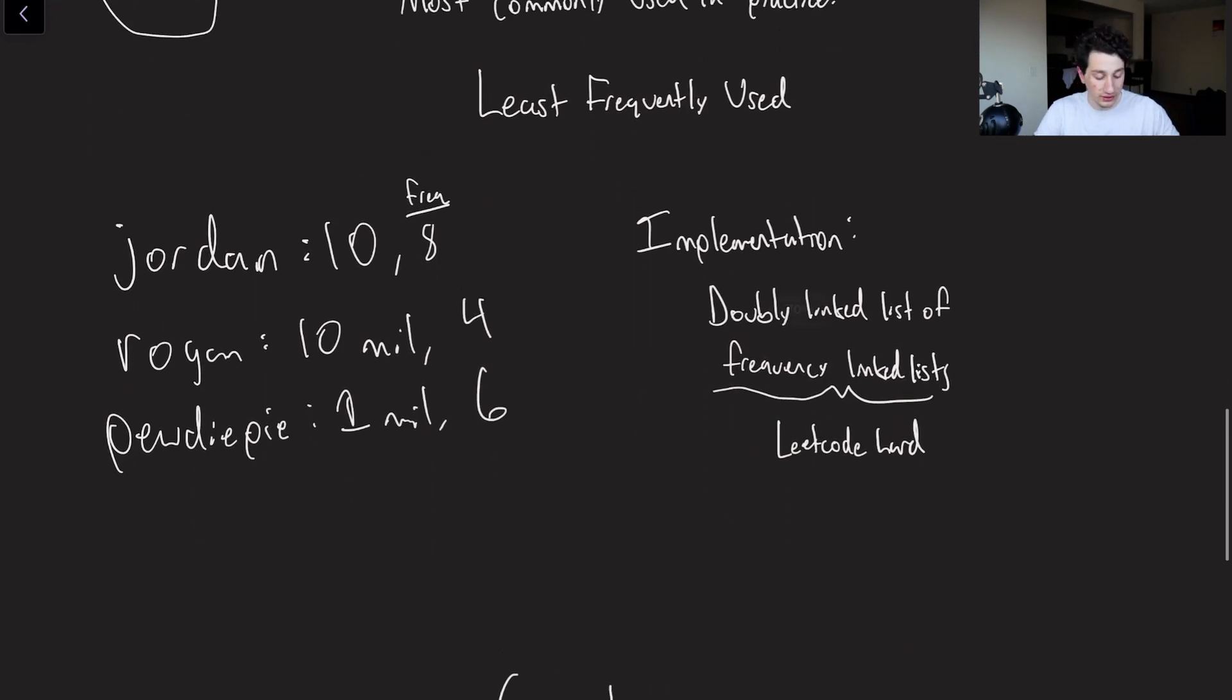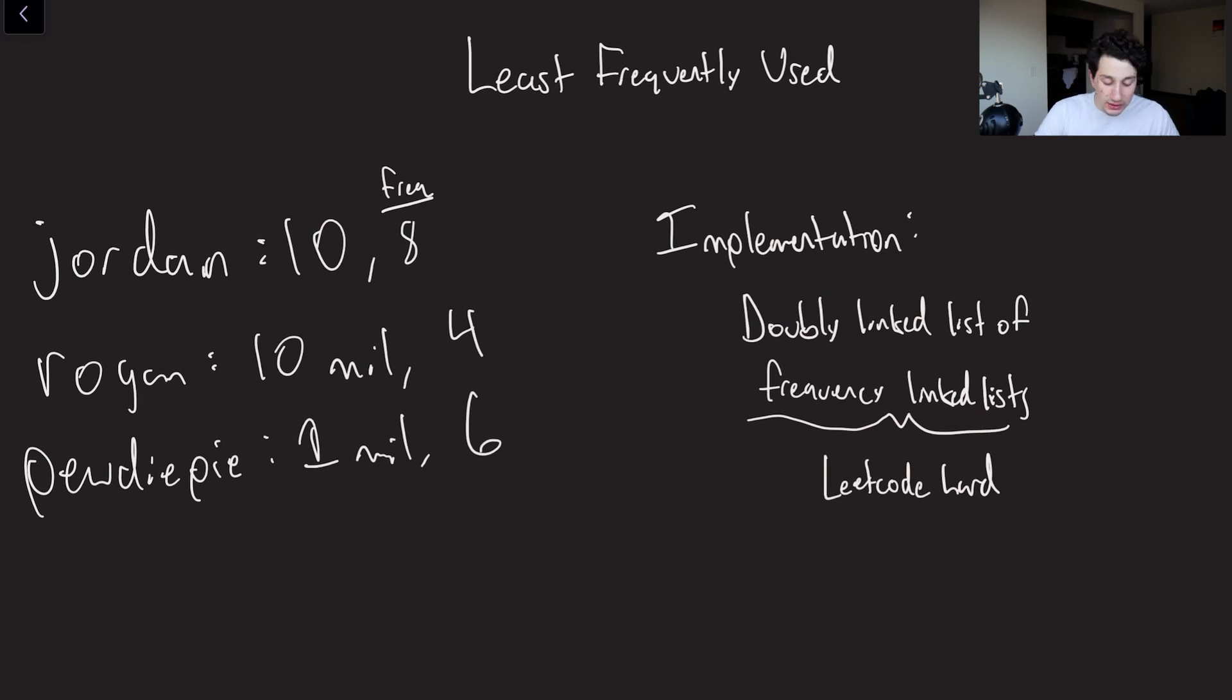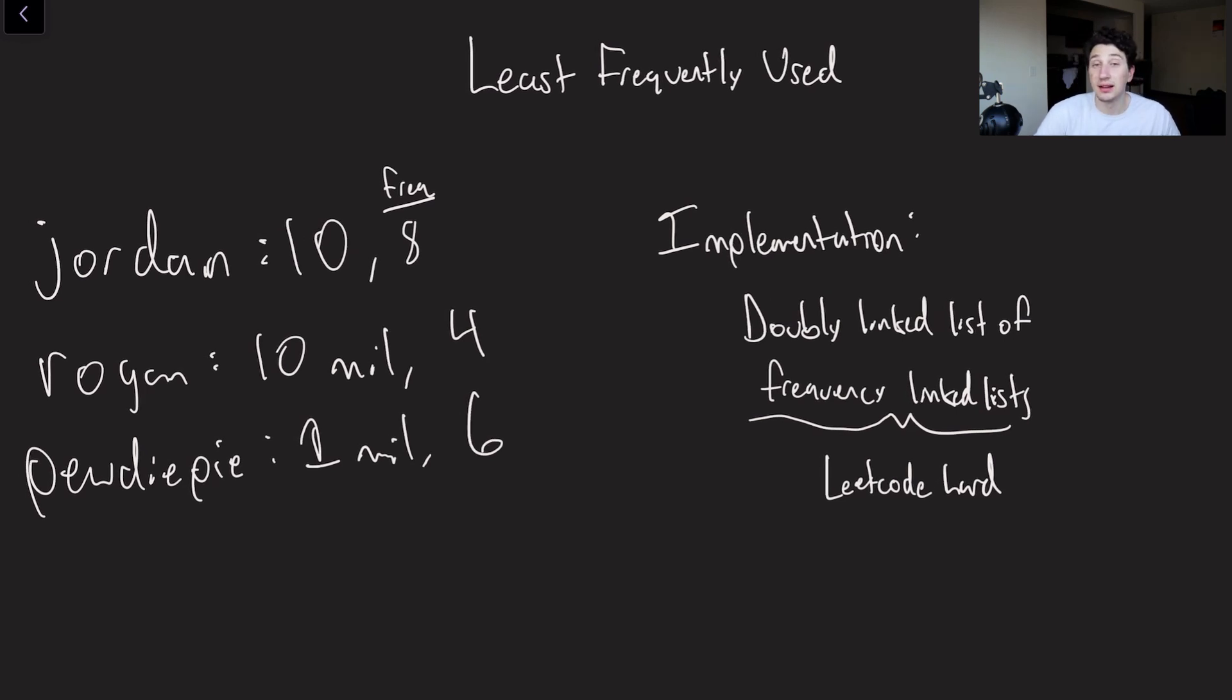Another possible alternative is LFU or least frequently used. So I'm not going to go too deeply into the implementation of something like this, because in and of itself, it is a LeetCode hard problem. But the general gist is you would actually want basically like two sets of doubly linked lists also with hash maps. And each of those doubly linked lists would have a frequency. So the frequency is going to represent how many times that cache entry has been accessed before. So you can see for the example of Jordan and how many views he has on YouTube, he has 10 views. And that cache entry has been accessed eight times. The Joe Rogan entry has been accessed four times and the PewDiePie entry has been accessed six times.